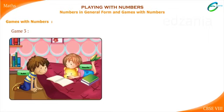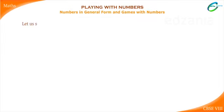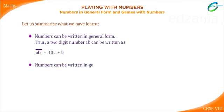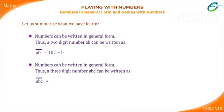Take some different numbers and play this game with your friends — these types of games are very interesting and sharpen your brain. Let us summarize what we have learned. Numbers can be written in general form: a two-digit number AB can be written as AB = 10A + B. A three-digit number ABC can be written as ABC = 100A + 10B + C.